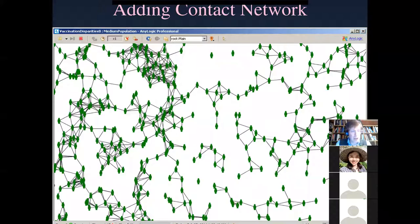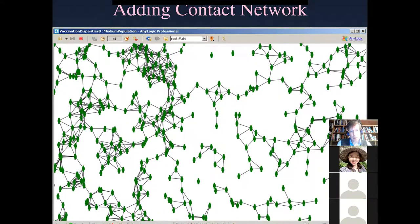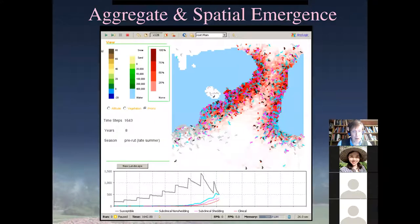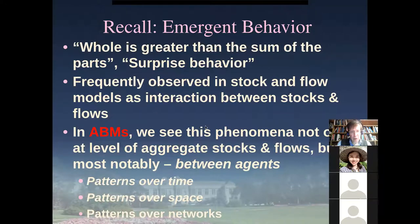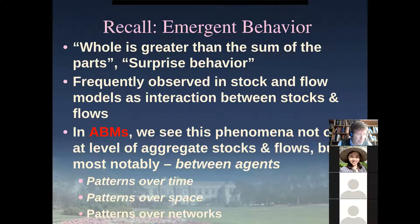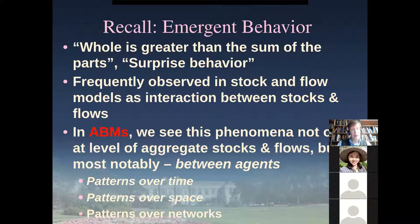We put these individual actors into contexts — they are situated agents, situated in a particular context and often affected in a local way by that context. We may put them in a network or in a spatial context. In stock and flow modeling with state equations, as we've been exploring with compartmental models, we have patterns that emerge over time: the growth and fall of infectives in a closed population, oscillation toward an endemic equilibrium in an open population, and rich emergent behavior over time.